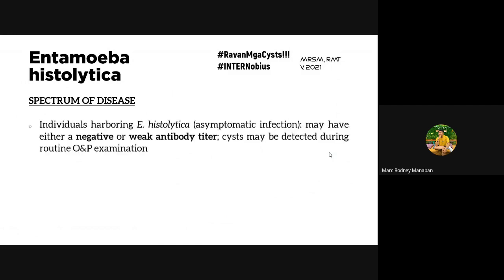For the spectrum of disease: patients can be asymptomatic with a negative or weak antibody titer. In asymptomatic cases, cysts may still be detected during routine O&P examination — these are carriers who don't exhibit symptoms. Usually, asymptomatic patients remain asymptomatic and don't cause true infection.